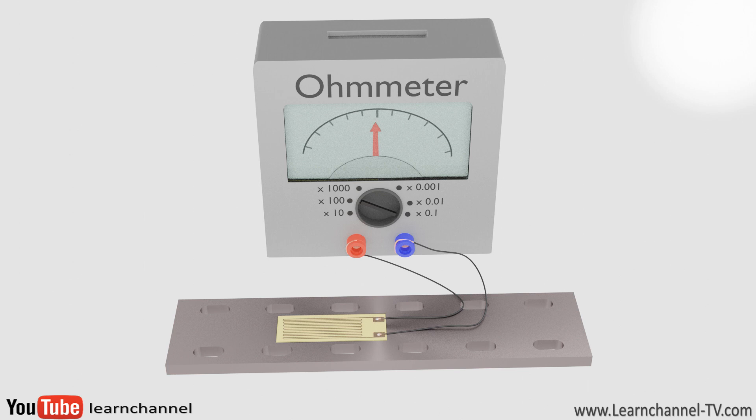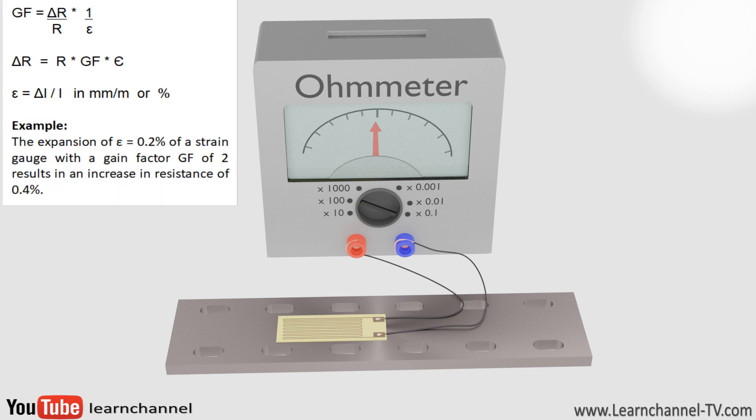A fundamental parameter of the strain gauge is the so-called gauge factor, which describes its sensitivity to strain. The gauge factor is defined as the ratio of the fractional change in electrical resistance to the fractional change in length, also called strain.